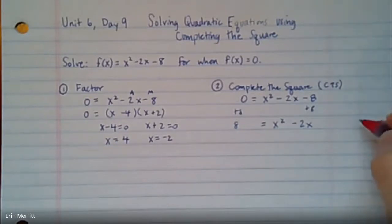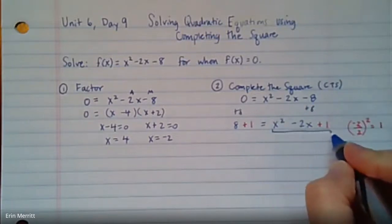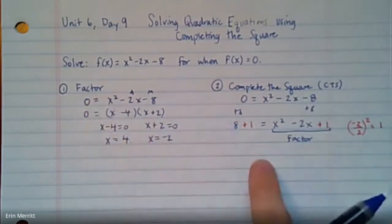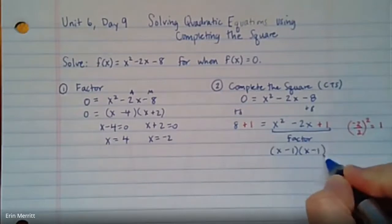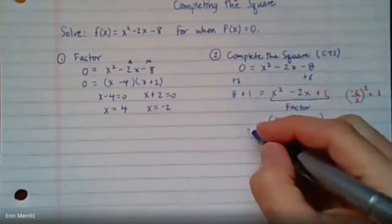Here comes the complete the square step. You take the b term, which is negative 2, chop it in half and square it. That's negative 1 squared, which comes out to just be 1. Add 1 here and to balance add 1 over here. From there now this guy I would factor. This factors into x minus 1 times x minus 1, or x minus 1 squared. On the left side, 8 and 1 gives me 9.